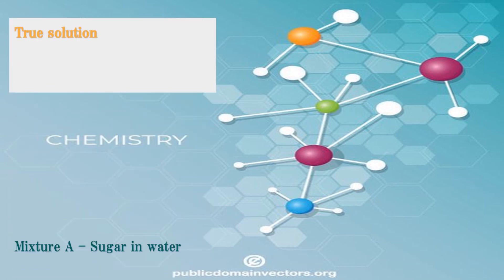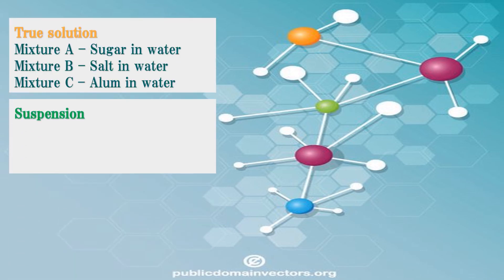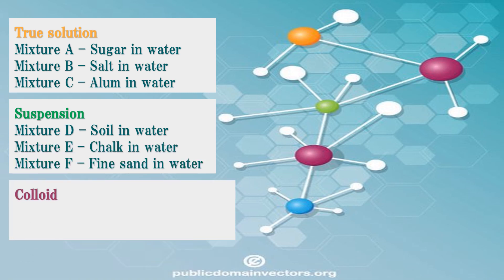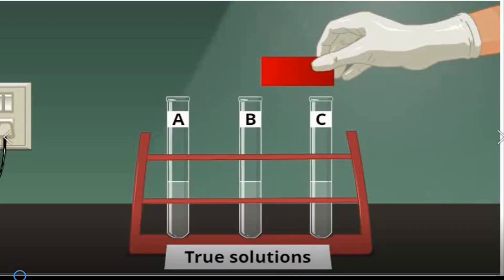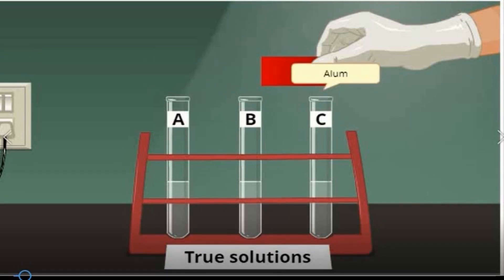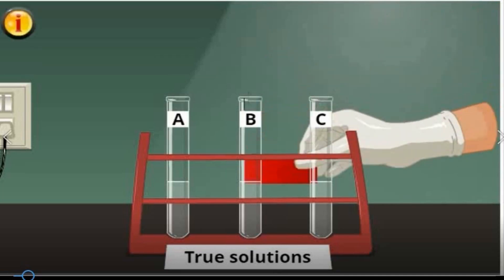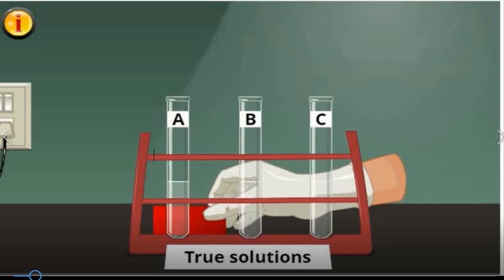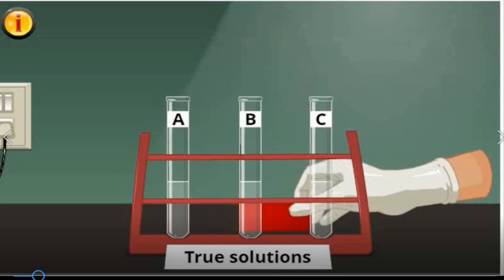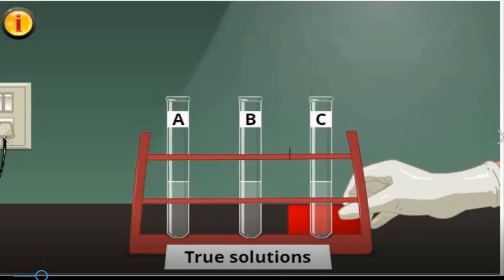Here are the different labels of the different mixtures that were prepared. Let us check the transparency of different true solutions. Here we have the solution of sugar in water, salt in water, and alum in water. If we put a piece of cellophane paper at the other side of the test tube, we can still see the cellophane paper — also in test tube B and in test tube C. This only shows that all true solutions are transparent.